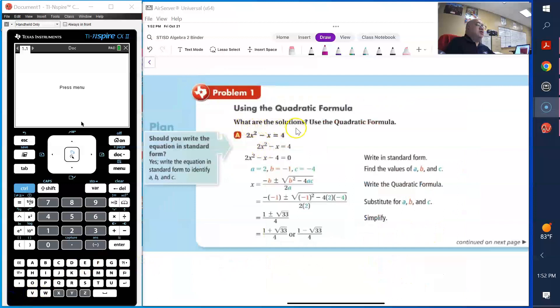What are the solutions? Use the quadratic formula. So here's the quadratic formula. The first step is to make sure that it's written in standard form. That means that the 4, the constant, will have to move to the left, so they subtracted 4. So the value of a is 2, the value of b is negative 1, and the value of c is negative 4.